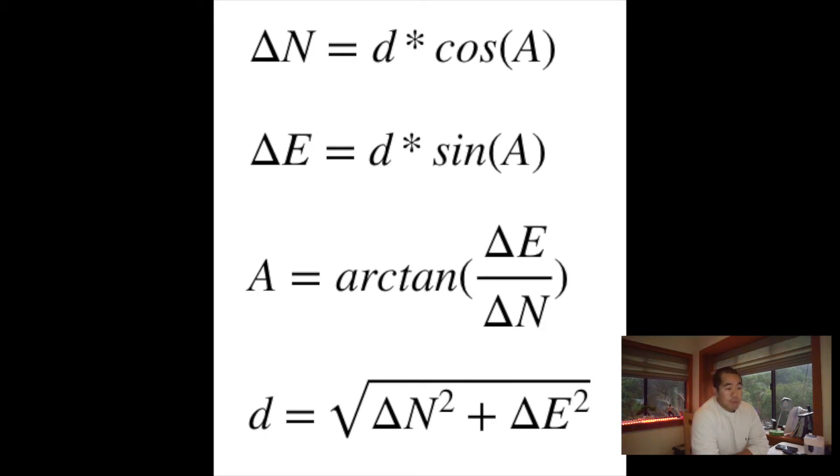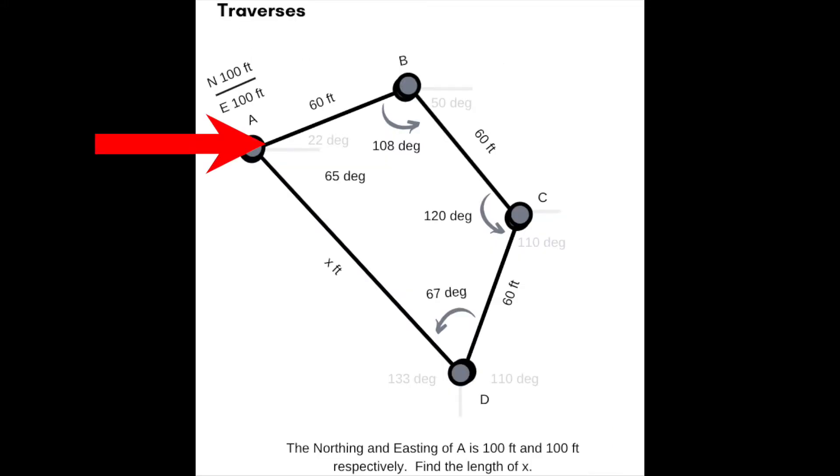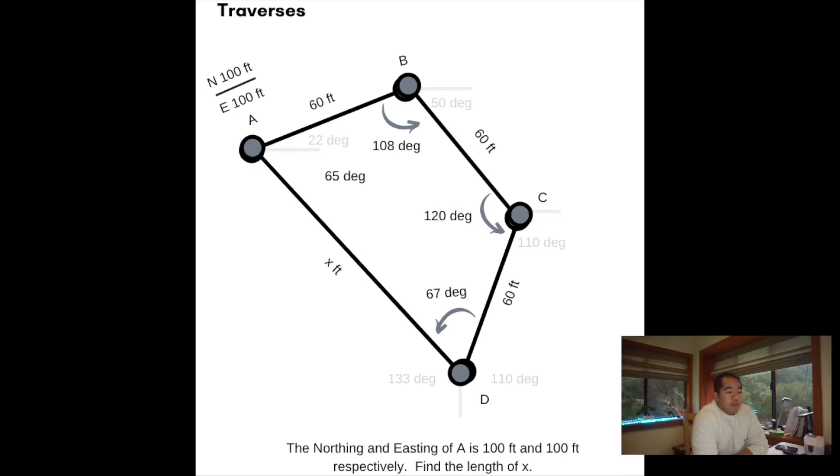This is similar to what you've normally seen in math with just delta x over delta y. Also, the distance between two points is the square root of delta N squared plus delta E squared. We're given 22 degrees down there, 60 feet up here, and then 50 degrees at point B and 110 degrees at point C. The northing and easting of A is 100 feet and 100 feet respectively. Find the length of x.